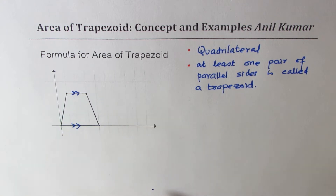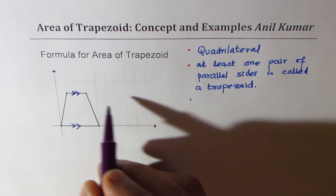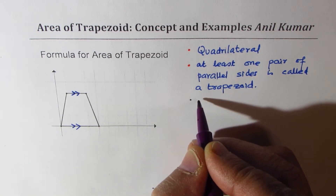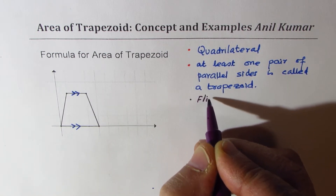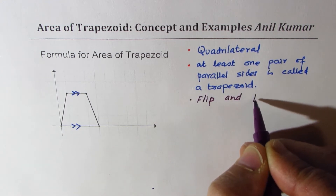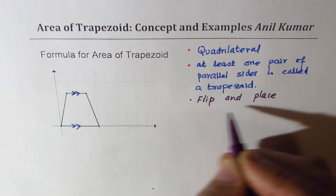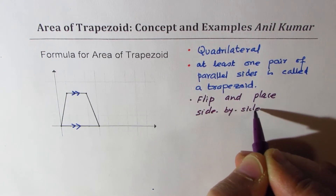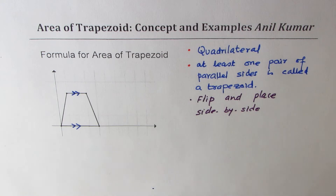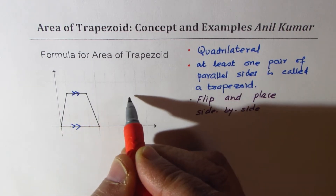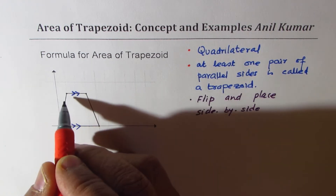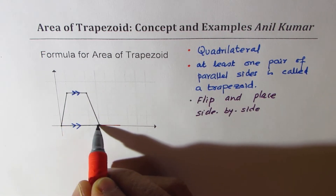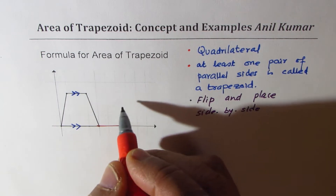How do we find the area of this? One method is that we can flip the trapezoid and place it side by side. What I really mean is that we have a trapezoid here, and if I flip it in this fashion and place them side by side, let's say this side I put on the bottom — so we get a length of two units here.